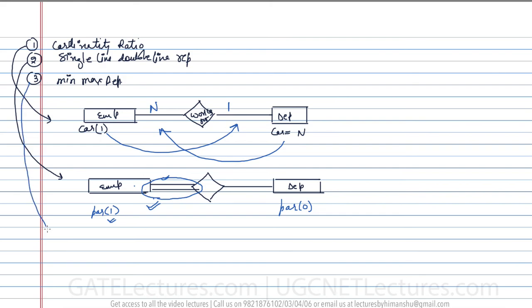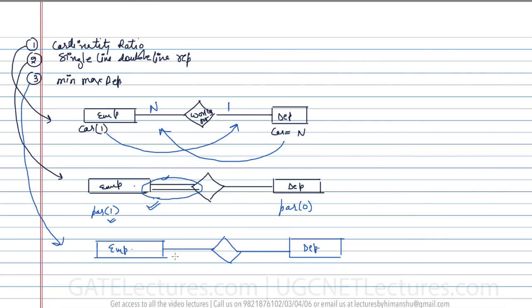In the min-max representation, we show both participation (minimum cardinality) and cardinality (maximum cardinality) for each side. The participation of employee is one and cardinality is one; the participation of department is zero and cardinality is N. This gives us the min-max notation. We will now look at the different kinds of relationships: one-to-one, one-to-many, many-to-one, and so on.